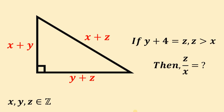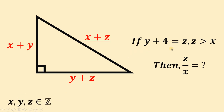Today, we will answer a geometry challenge given by one of our followers. The question goes like this: given a right triangle with side lengths of x plus y and y plus z, with a hypotenuse of x plus z, where x, y, and z are all integers. If y plus 4 equals z, and z is greater than x, what is the value of the ratio of z to x?